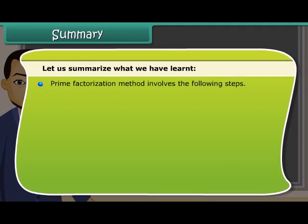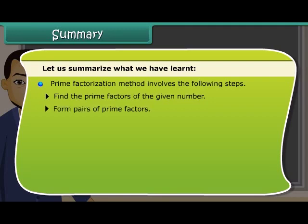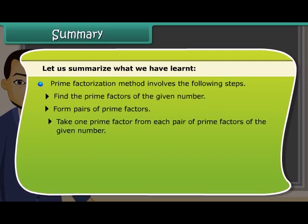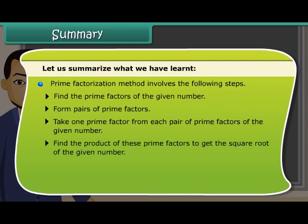Prime factorization method involves the following steps: find the prime factors of the given number, form pairs of prime factors, take one prime factor from each pair of prime factors of the given number, find the product of these prime factors to get the square root of the given number.